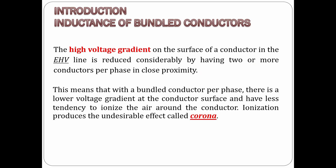In theory and in actual practice, the high voltage gradient on the surface of the conductor in EHV lines, or extra-high voltage lines, is reduced considerably by having two or more conductors per phase in close proximity. This means that with a bundled conductor per phase, there is a lower voltage gradient at the conductor surface and less tendency to ionize the air around the conductor.